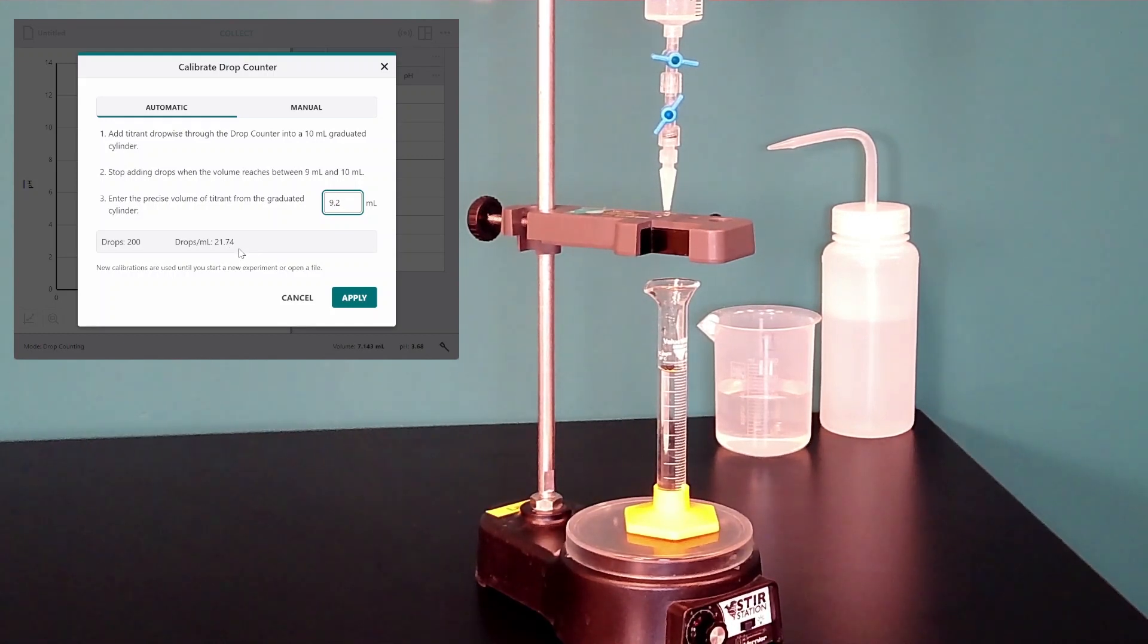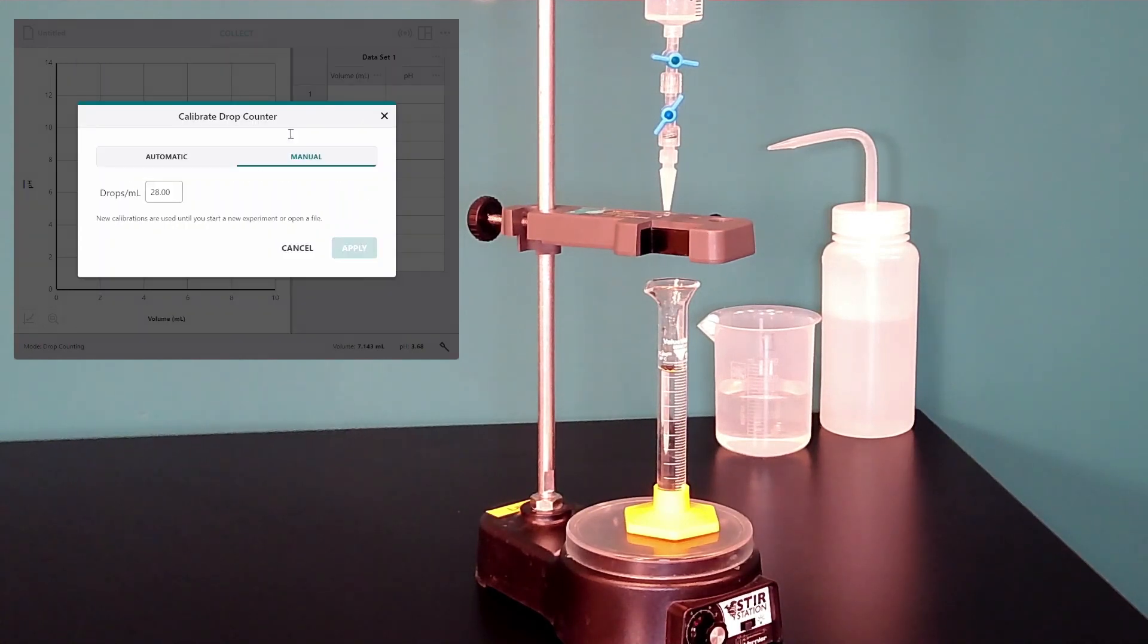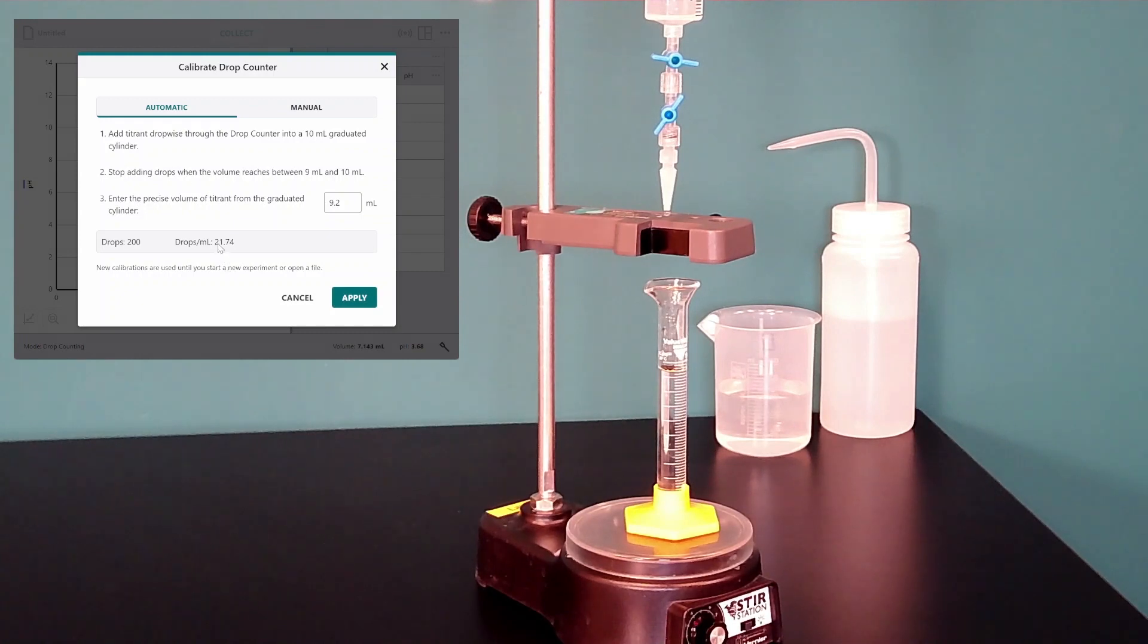This calibration is not stored to the drop counter. So to save me some time in the future I want to write this number down and then immediately once I get into the software go into this manual tab and type that value in there.